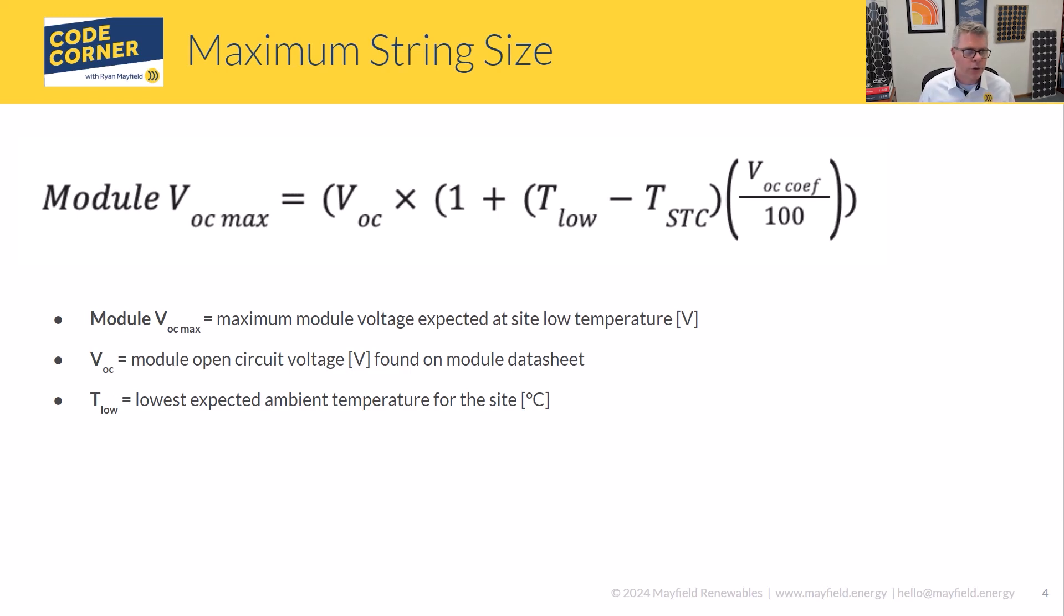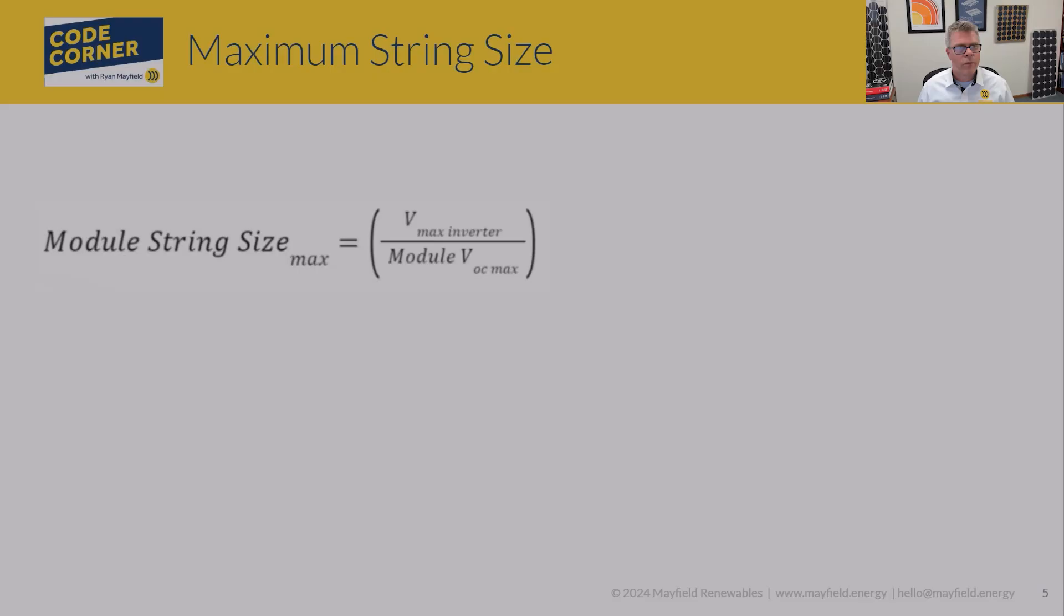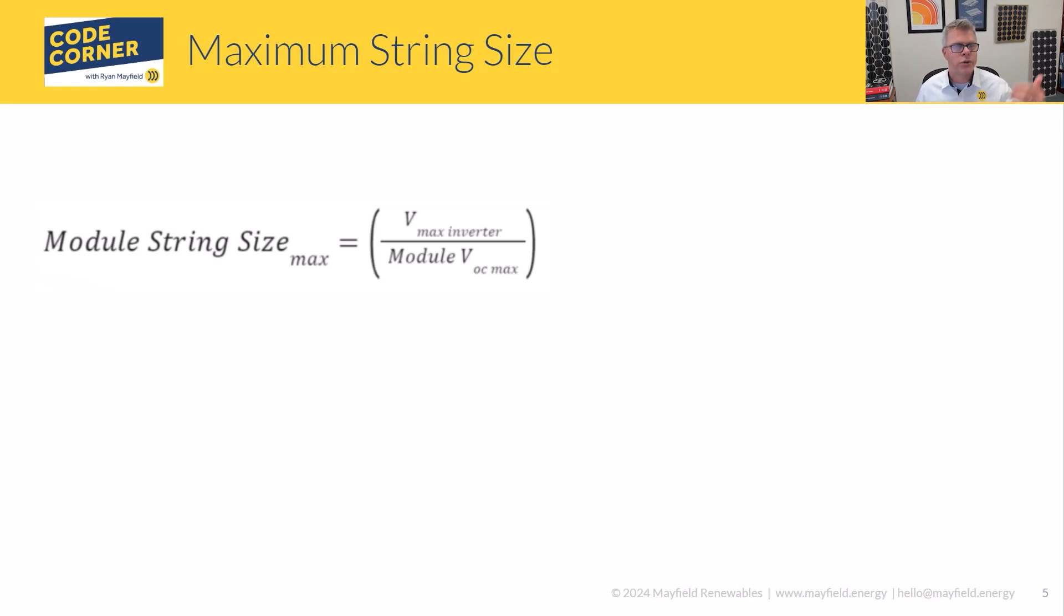Again, STC is that 25 degrees C. And then there is a separate coefficient for open circuit voltage. Look at your data sheet and make sure that you're looking at them closely because there will be two coefficients, one for open circuit voltage, one for maximum power. You want to make sure you apply them differently because they are slightly different. Then just like with the previous one, you're going to take the maximum voltage for the inverter - if it's a rooftop inverter, it might be 600 volts, if it's residential 1000 volts, if it's commercial - and you will divide that by that value you just calculated, the adjusted open circuit value.